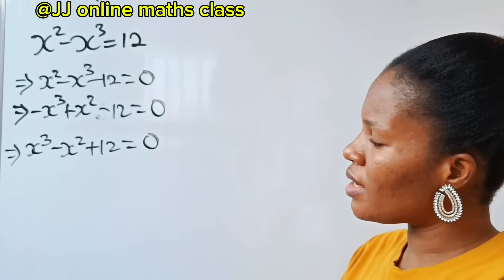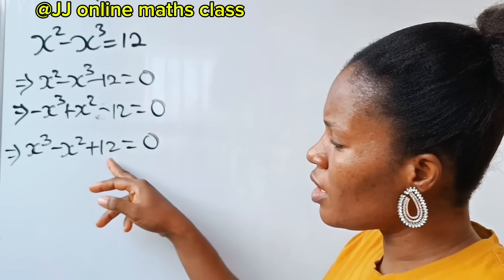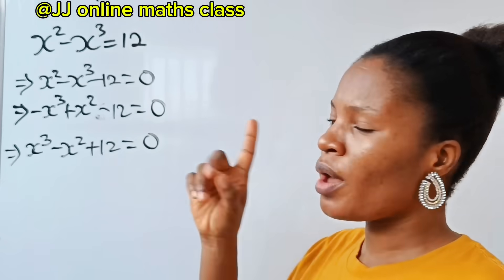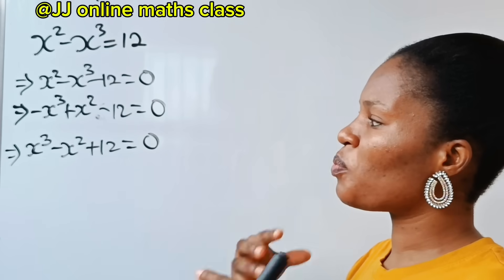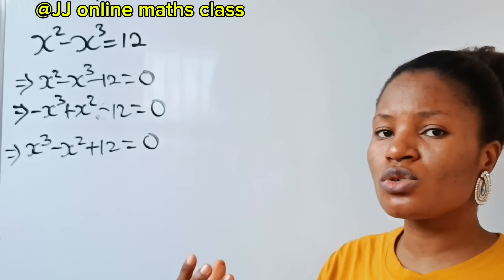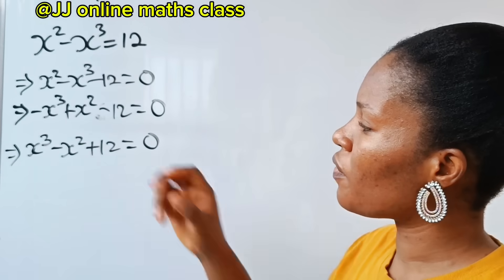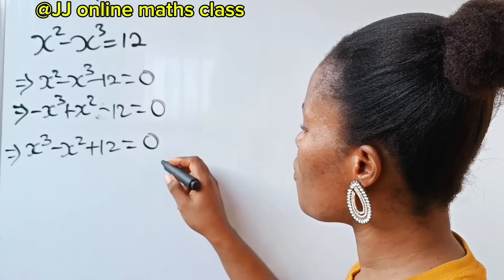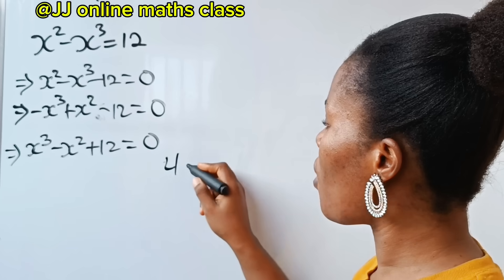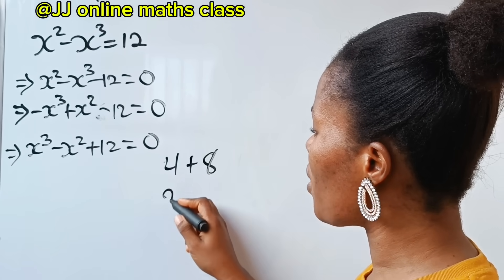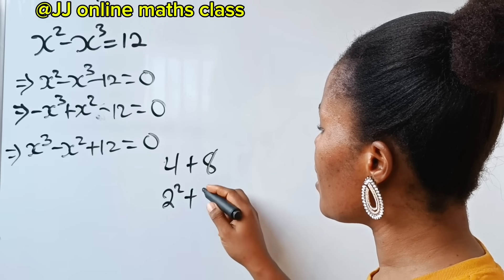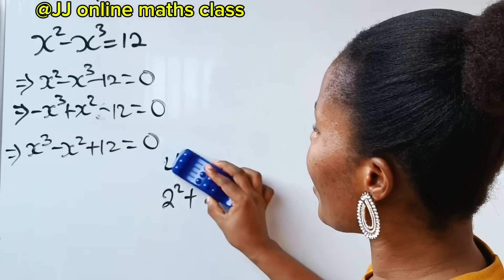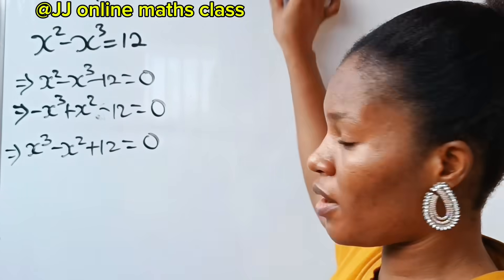We need to factorize this. This 12 — we need two numbers that when we add together, we get 12. One of those numbers must be able to be raised to the power of 2, and the other one will be in degree of 3. The two numbers are 4 and 8. Because 4 is 2 to the power of 2, and 8 is 2 to the power of 3 — degree of 3 and degree of 2 — so that they can be easily factorized.